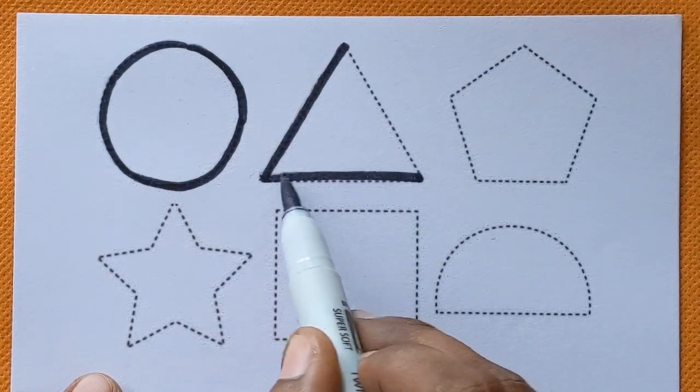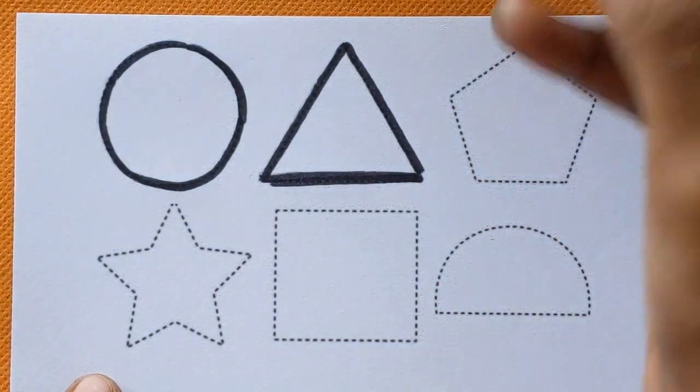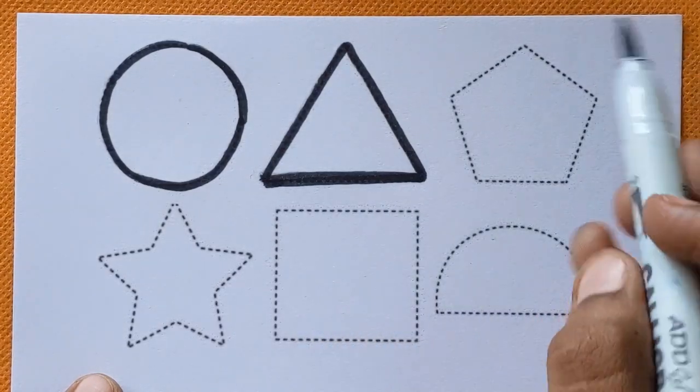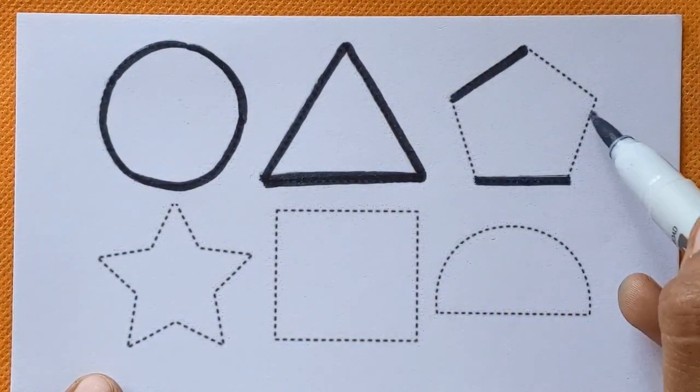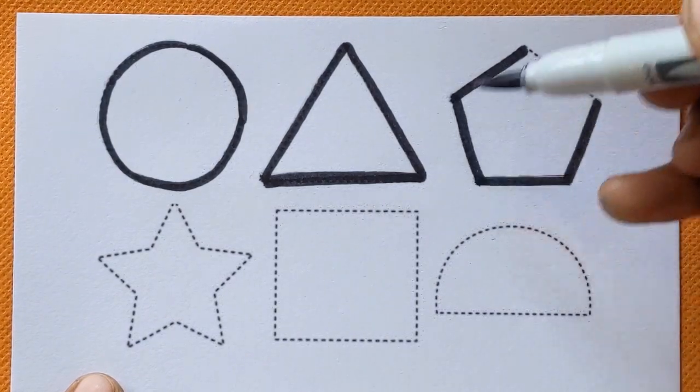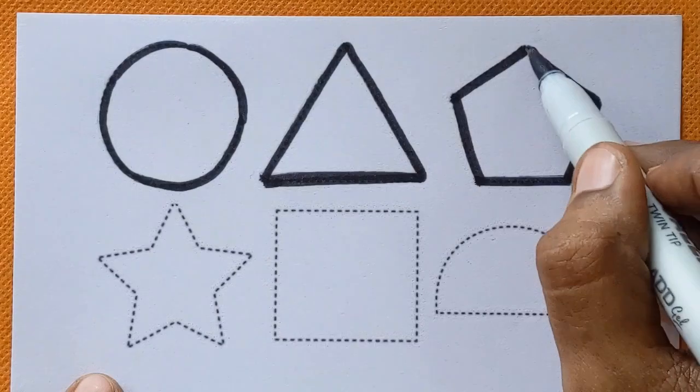Triangle. Which shape is this? This is triangle. Circle. This is pentagon. Pentagon.